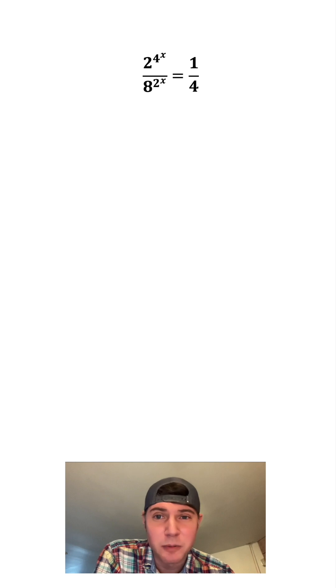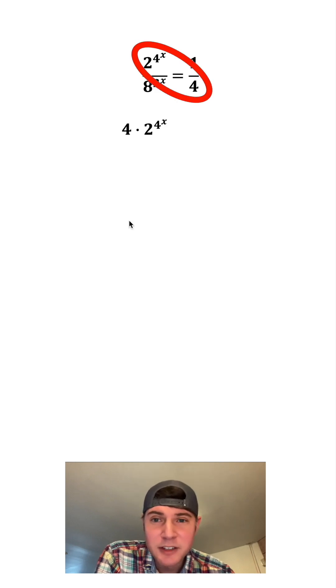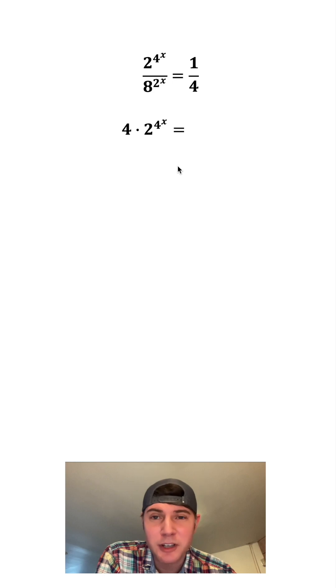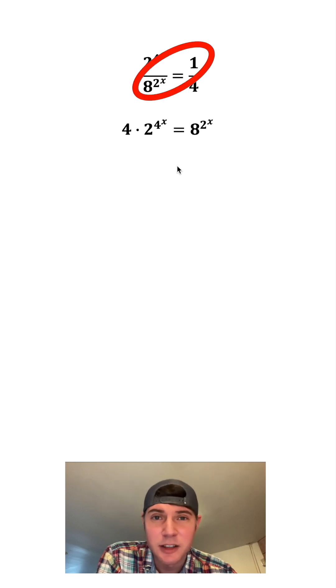First step, let's cross multiply. This times this gives us 4 times 2 to the 4 to the x equals, and then 1 times this is just 8 to the 2 to the x.